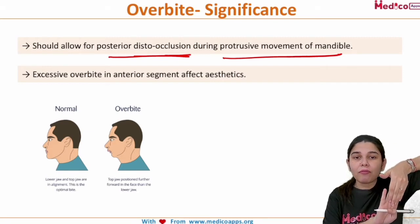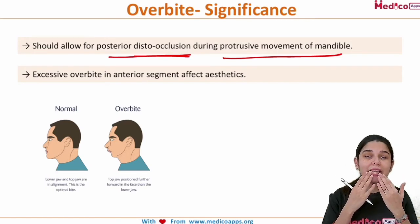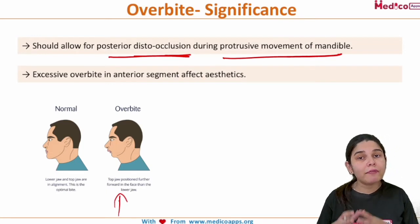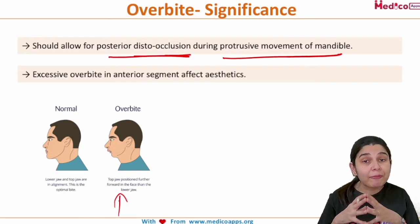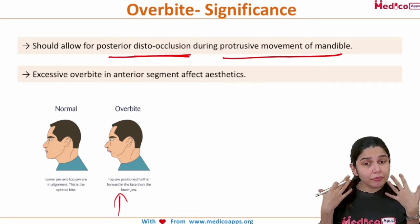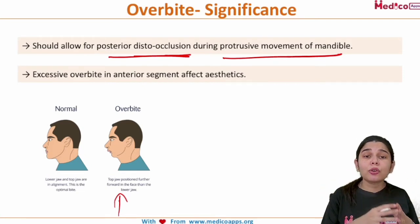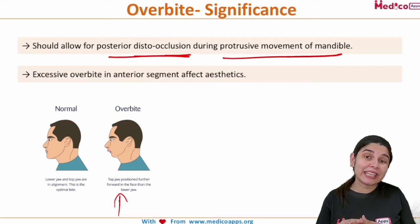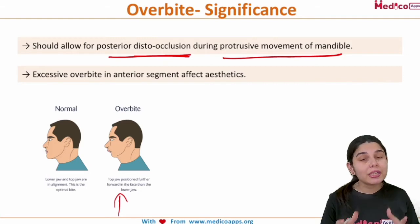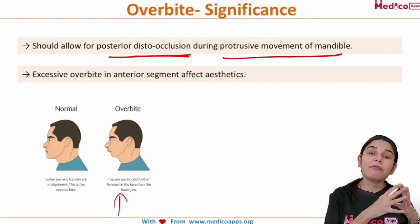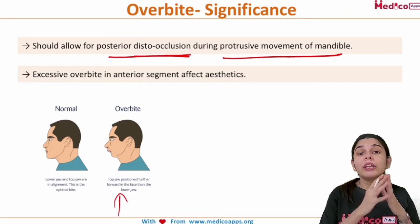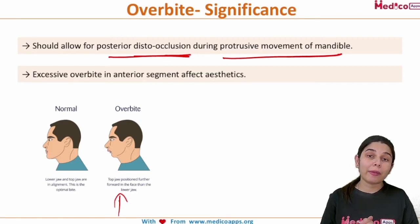Secondly, if there is excessive overbite, the anterior segments will look such that the top jaw is protruded upwards and the mandible is set back, giving a bad aesthetic look to the patient's face. These are the two significances of why we need to understand and follow the rules for overjet and overbite.